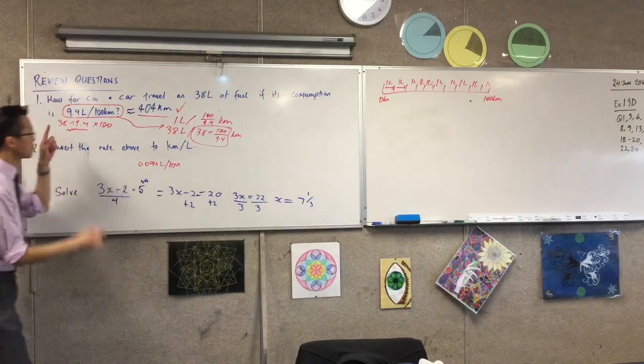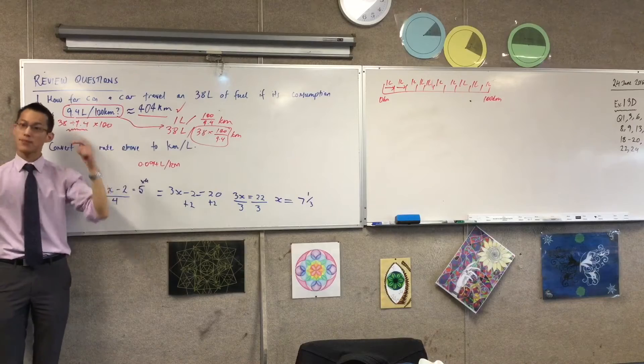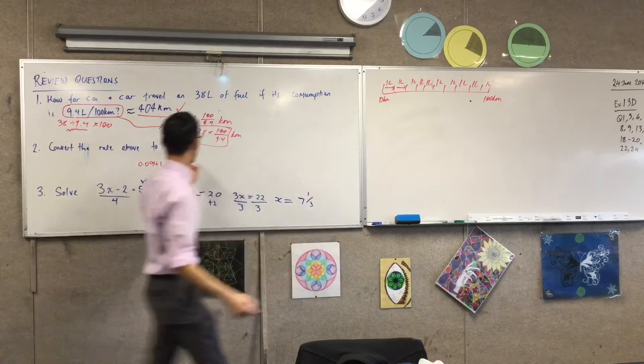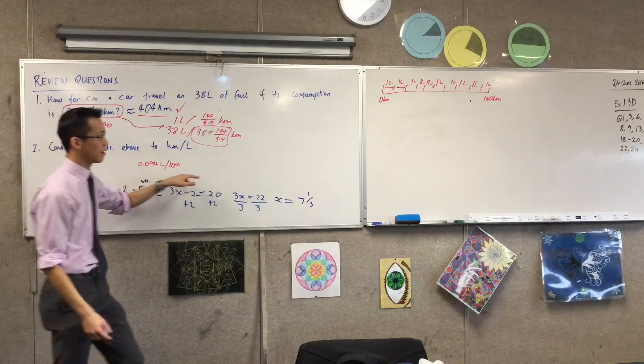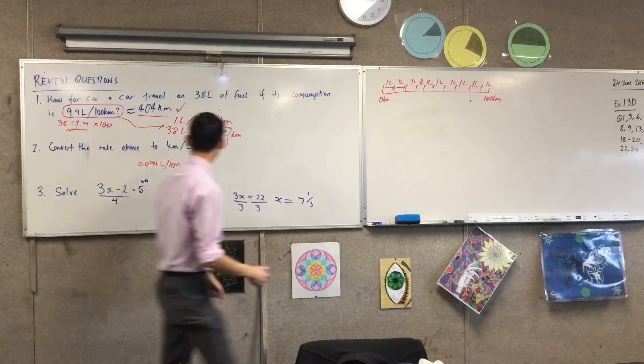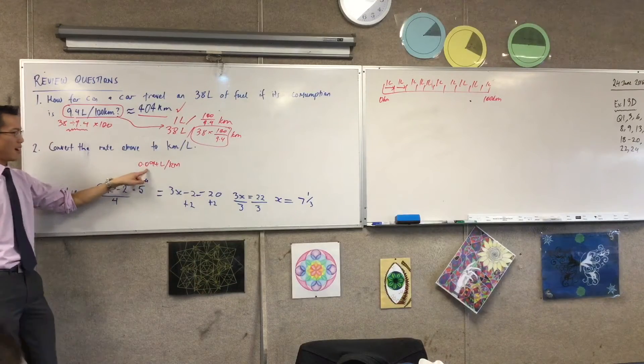So this is my mythical 10 liters for 100 kilometers. So therefore, what is my kilometers per liter? It's 10 kilometers every single time. Does that make sense? Is this about right?